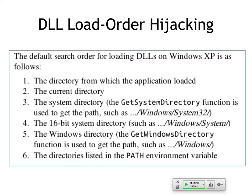That happened because Microsoft did not specify the complete path to executables, and their recommendation since then is whenever you're launching anything programmatically, you should give the full path — system root, Windows, System32. DLLs very often do not specify the full path, and if you don't, Windows will hunt for it, looking first at the directory the application was loaded from — for example, if loading from a USB stick, it'll look on the USB stick for a DLL with that name.